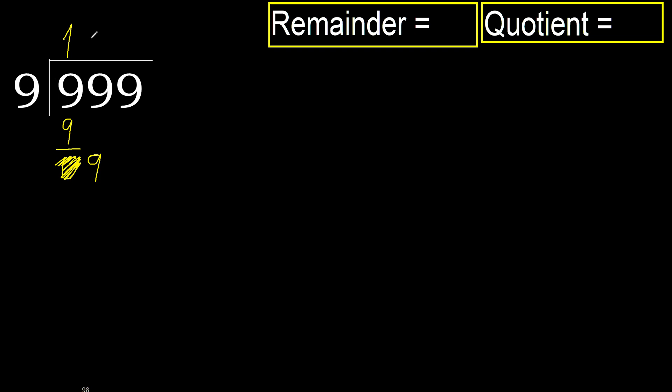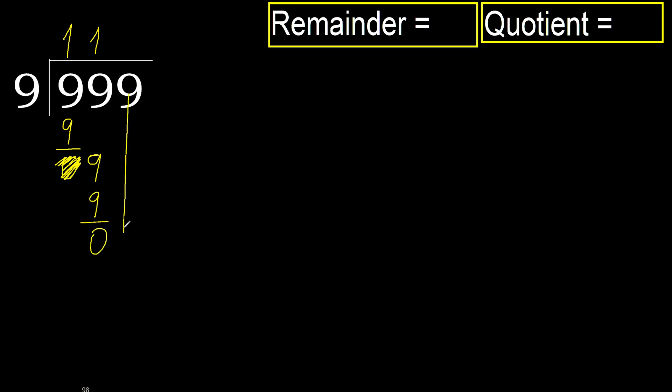9 multiplied by 1 is 9. It is not greater. Okay, subtract. Next.